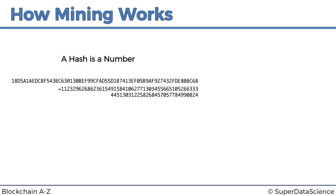We can actually convert this hexadecimal number into a normal decimal number - there's our decimal representation. The number is visually longer because in the decimal system we have 10 digits, whereas in the hexadecimal system we have 16 digits. Every digit can encode a higher value in hexadecimal, so visually the number is shorter, but the overall value is exactly the same. It's like converting a decimal number to binary - very long, but still the same number, just a different representation.